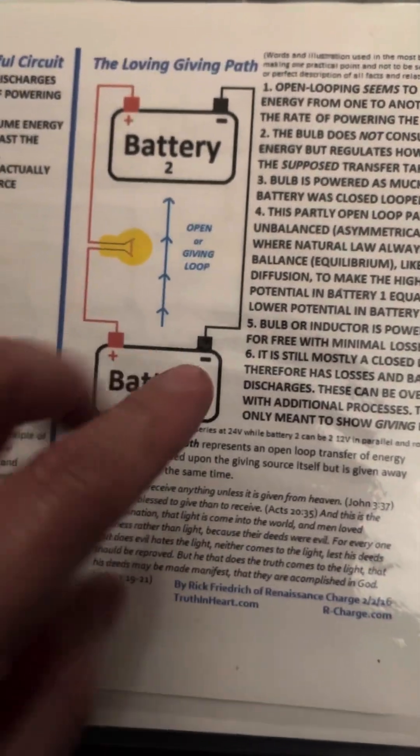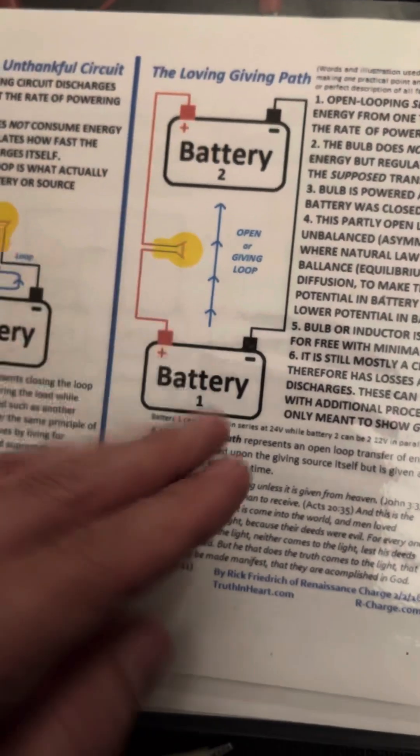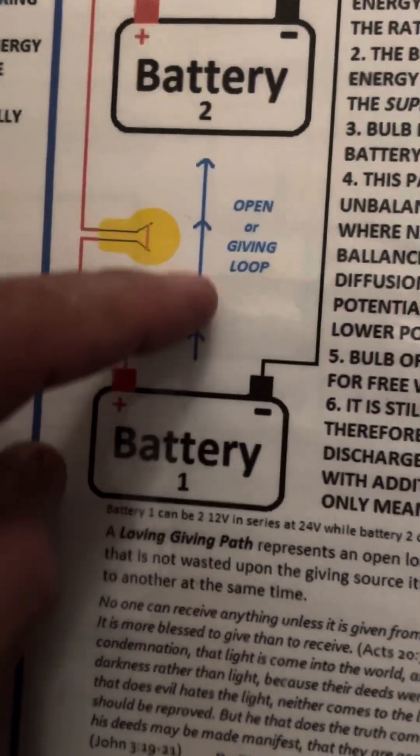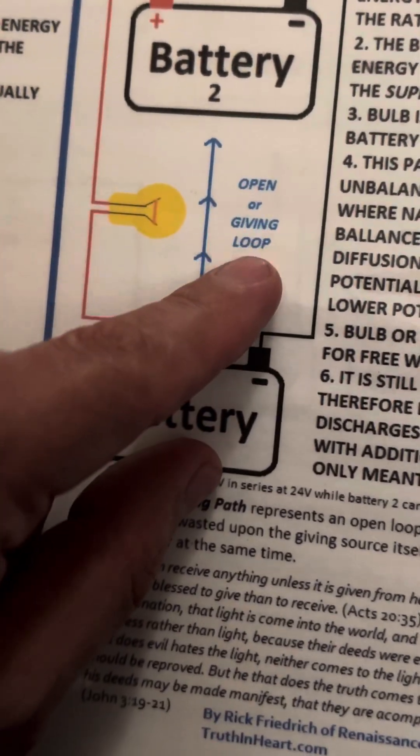They're not telling you this, but when you start experimenting, you figure this kind of stuff out. These two are in series. These two are in parallel. And the charge moves this way. See the arrows going this way? Open or giving loop. See?